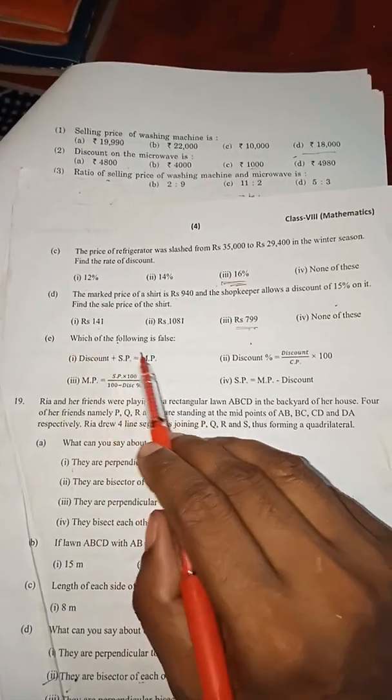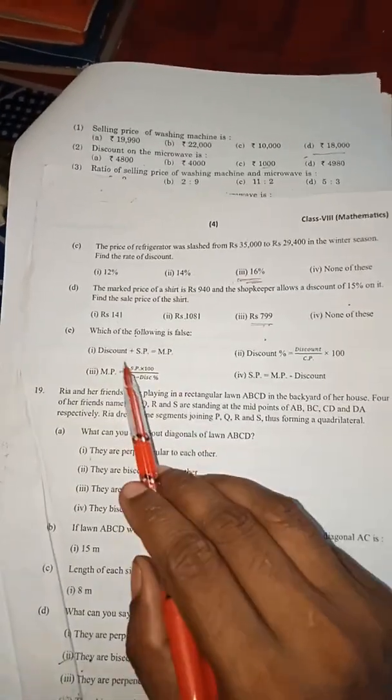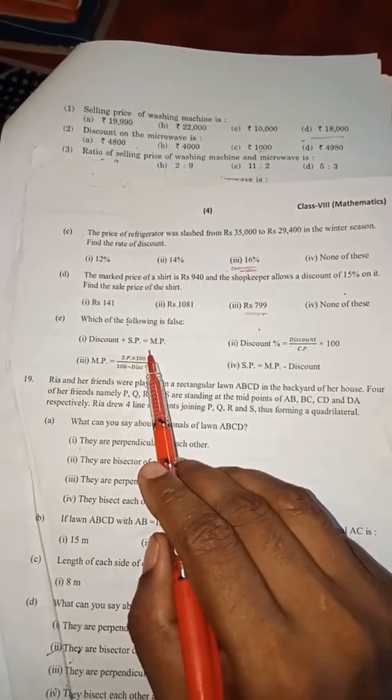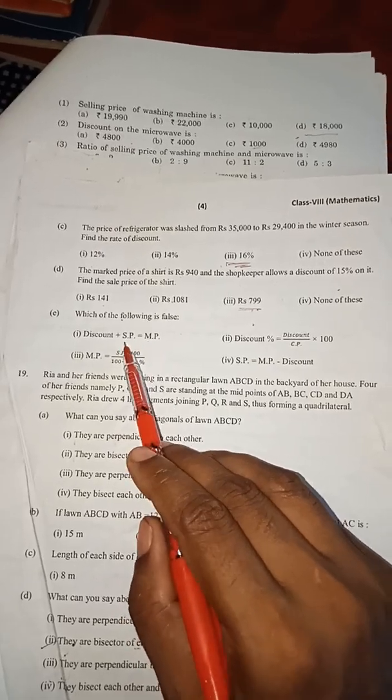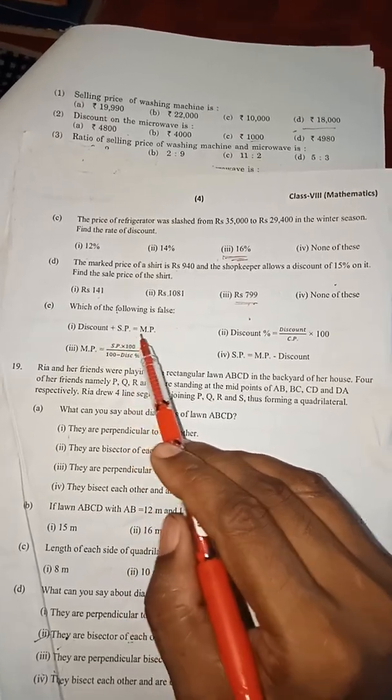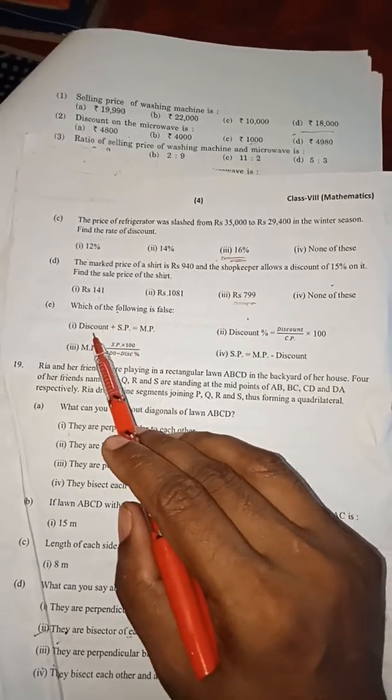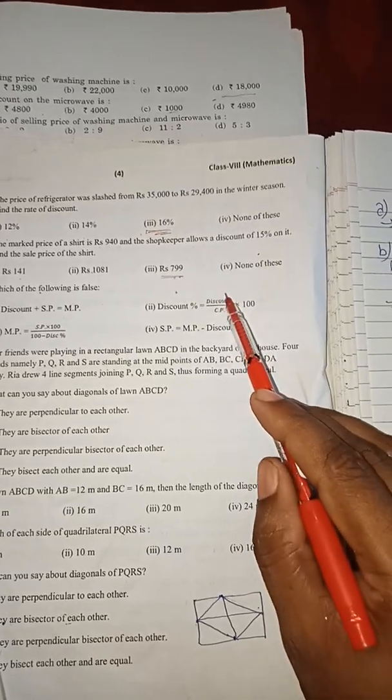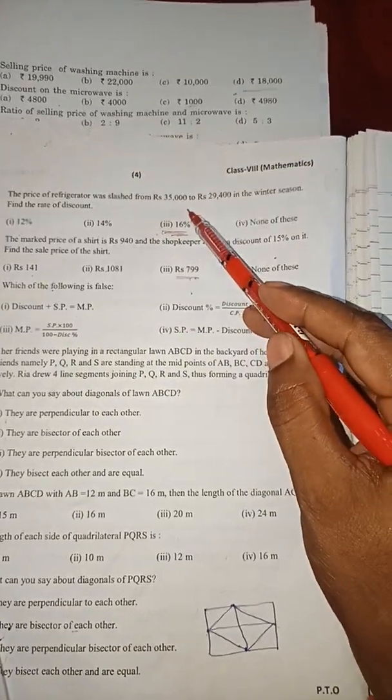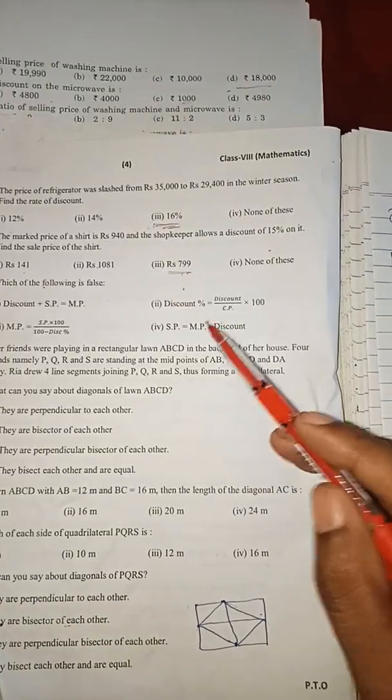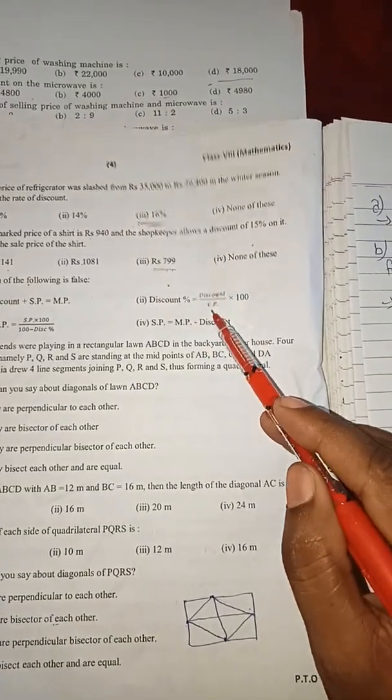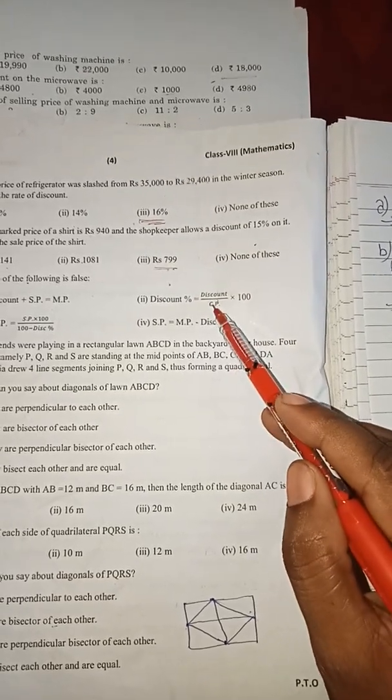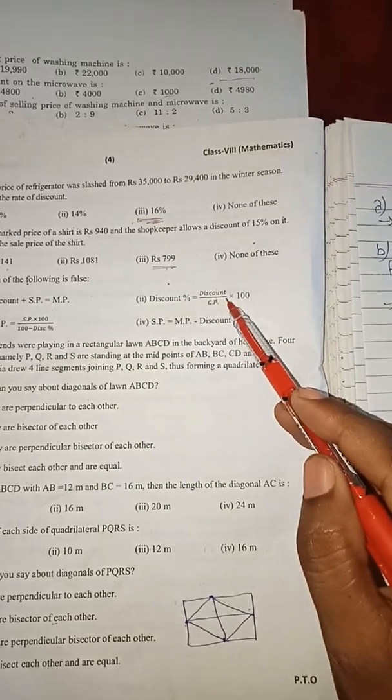Now at last question: which of the following is false? So discount plus selling price equals MP. You know that it is right, because selling price - what is selling price? If the discount is reduced from MP then we get selling price. So that option is right. Second: discount percent equals discount by CP into 100. But just in previous questions, in question C and also other questions, we have applied the formula discount by previous, means the starting value, that is MP. But here is CP given, so I think that it is wrong.